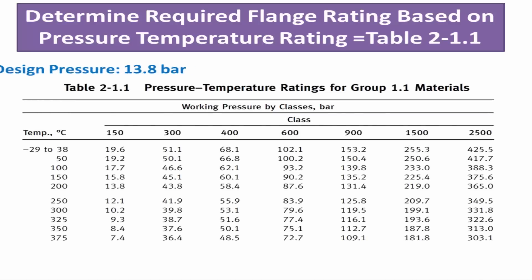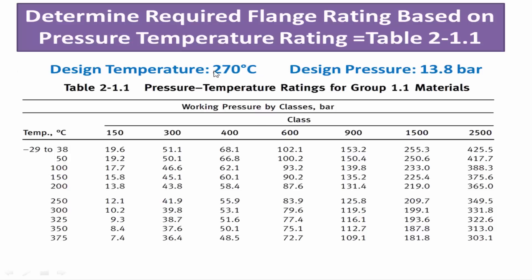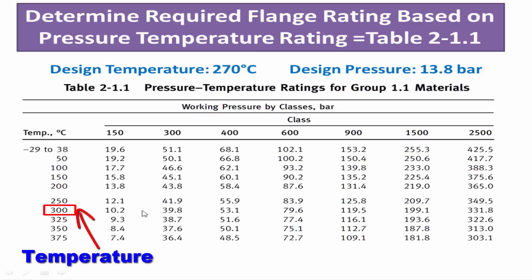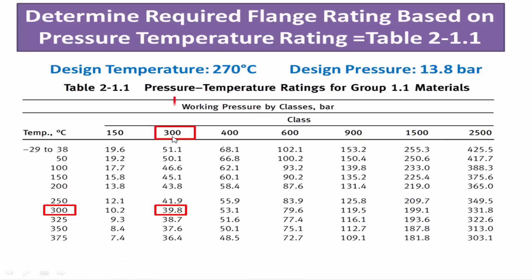In Table 2-1.1, select the flange rating class based on the given existing piping system temperature and pressure. Consider the nearest temperature and pressure values in the table. For example, given a temperature of 270 degrees Celsius, consider the nearest value in the table, which is 300 degrees Celsius. Similarly, consider the pressure value. So finally, for the existing piping system, the appropriate flange class is 300.